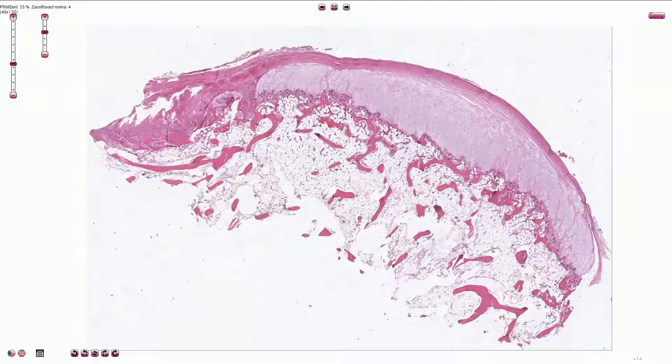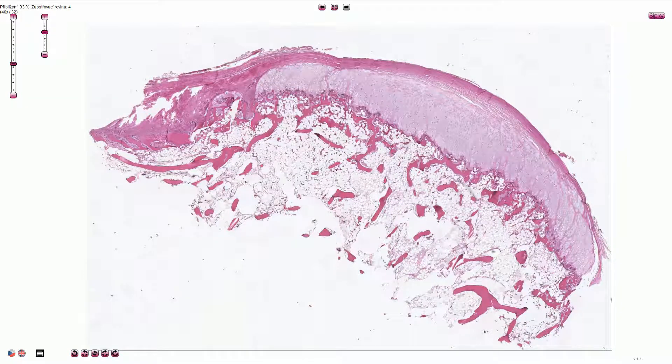Here we are looking at the osteochondroma. It is a benign tumor which arises on the surface of the bone, usually near the metaphysis.